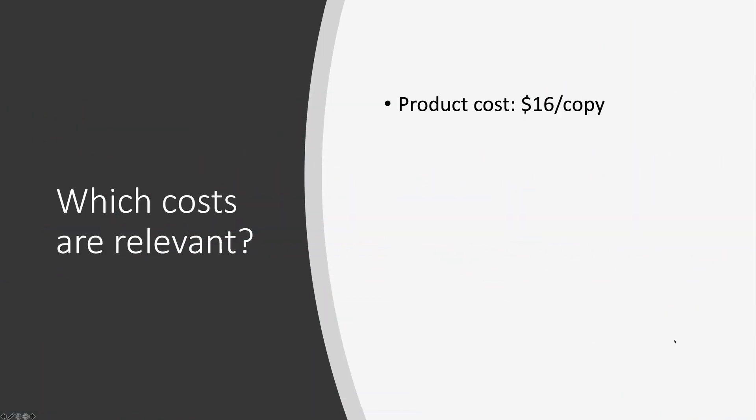If the production cost is irrelevant, what are the costs that are relevant? We can think of at least two other costs. One is inventory cost — when you have leftover books, you have to store those books. The second type of relevant cost is easy to miss: it is the capital cost, the cost of money on the production.